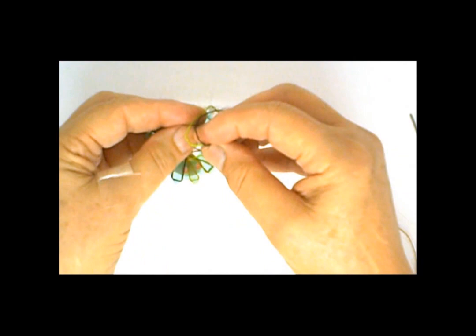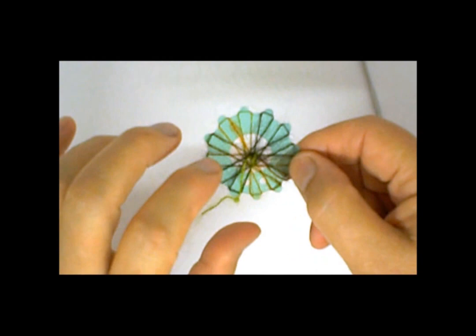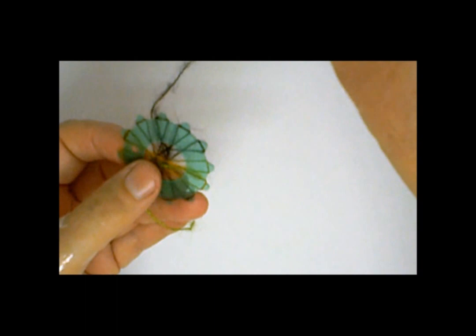Okay, so I've tied a double knot at the center to hold these together. This will be the wrong side of the daisy. The knot's there. Okay, so we're going to flip it.